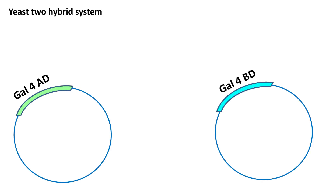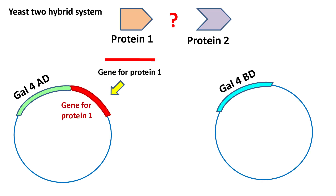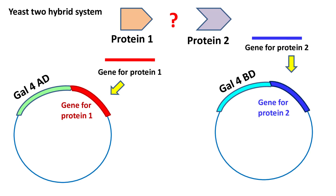Let's say we want to study the interaction between two proteins — protein 1 and protein 2. To study if this interaction occurs or not, the gene for protein 1 is ligated next to the Gal4 AD gene in the plasmid. In a similar way, the gene for protein 2 is ligated next to the Gal4 BD gene in the other plasmid.